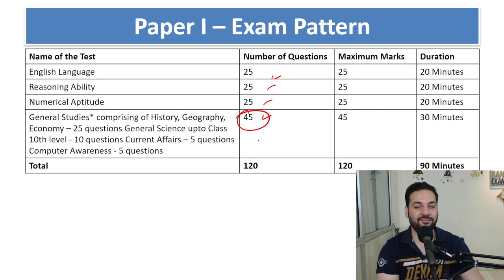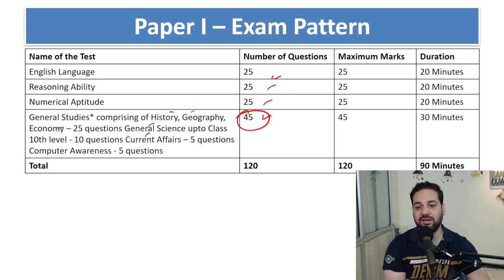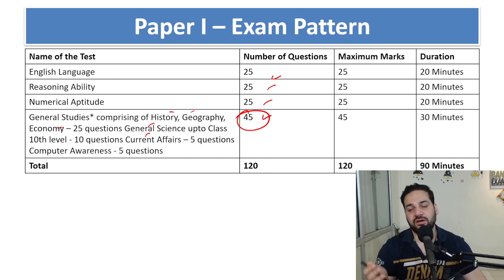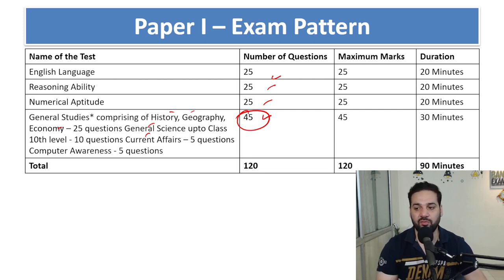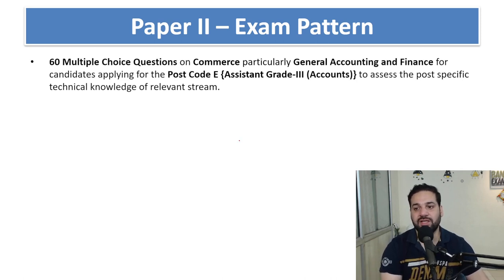In Phase 2, General Studies has a higher weightage with 45 questions covering History, Geography, Economics, General Science, and Current Affairs. This is at the 10th level, whereas Phase 1 was at the 8th level. Phase 2 Paper 1 has 120 questions to be completed in 120 minutes.